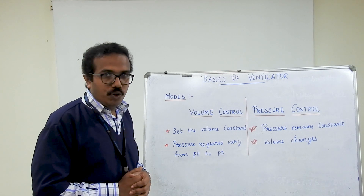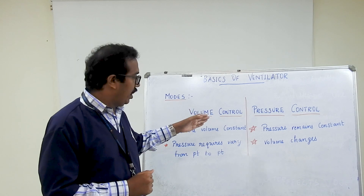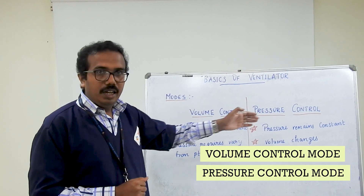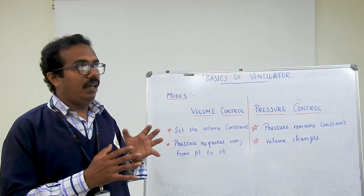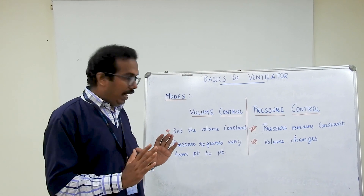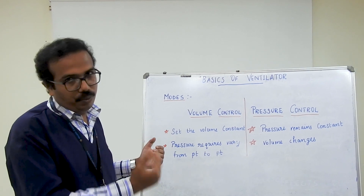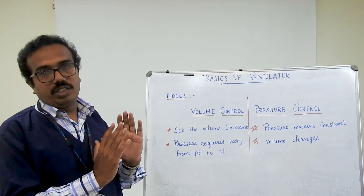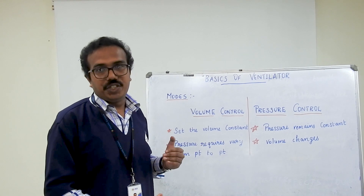Next, we will see the modes of ventilation. The electronic function is divided into two modes: one is volume control mode and another is pressure control mode. In volume control mode, we set the volume of air to push in per minute, so the volume remains constant while the pressure required may vary from patient to patient. In pressure control mode, the pressure of the air remains constant and the volume required may change from patient to patient.